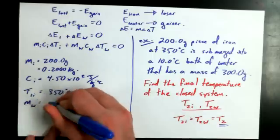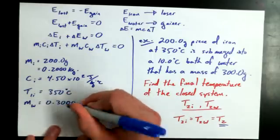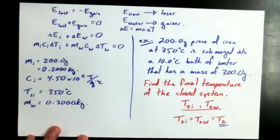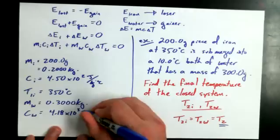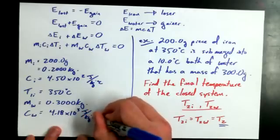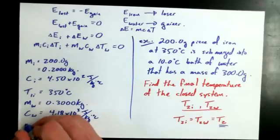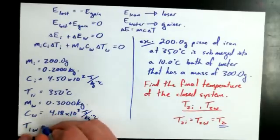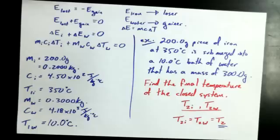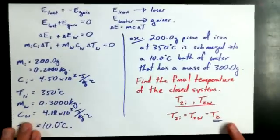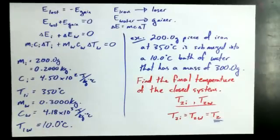So the mass of the water is 0.3000 kilograms—I'll just convert it straight to kilograms, divide by a thousand from the original 300 grams. And the heat capacity of water is 4.18 times 10 to the power of 3 joules per kilogram degree Celsius. And the initial temperature according to the word problem is 10.0 degrees Celsius. That's what we know so far, okay. And it's going to turn into a little bit of math. I'm going to pause the recording.